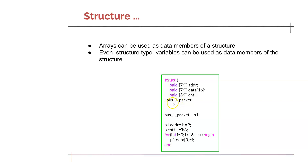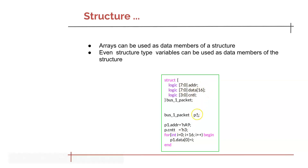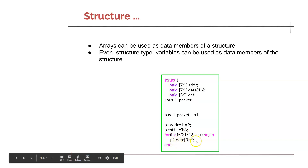After defining this structure type with the typedef keyword, you can declare individual structure type variables like 'ethernet_packet p1'. You can then access individual data members like 'p1.addr' and 'p1.control'. In a for loop, you can also access the array data member elements like 'p1.data[0]' or 'p1.data[5]' to access all the data elements in this packet.